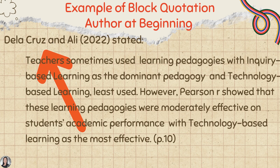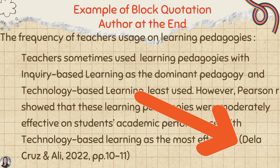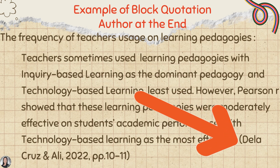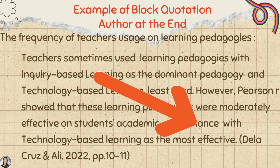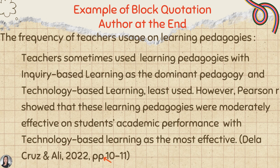Now, there are two ways to do block quotation. First is author at the beginning — for example, 'LaCruz and Ali, 2022 stated:' at the beginning. The second way is author at the end. Note that inside parenthetical citation we use the ampersand symbol instead of the word 'and.' Also, if your quotation spans two pages, use the symbol PP meaning pages — for example, pages 10 to 11. If from only one page, just use P meaning page. In some instances where you cannot see a page number, count the paragraph manually and use 'para.' followed by the paragraph number.